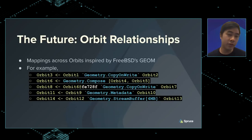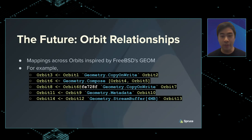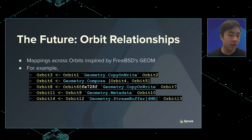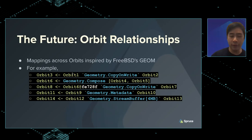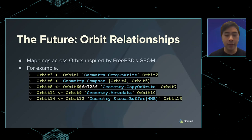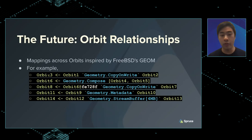In the future, we imagine orbit relationships where you can store things into orbits — inspired by FreeBSD's ZFS. If we have two orbits, you might have a copy-on-write relationship between orbit one and two, where you only have read access to orbit one but want to write to it. So you make orbit three as a copy-on-write of one and two. All your changes are stored to orbit two, orbit one stays the same, but when you read orbit three it looks like you wrote to orbit one.